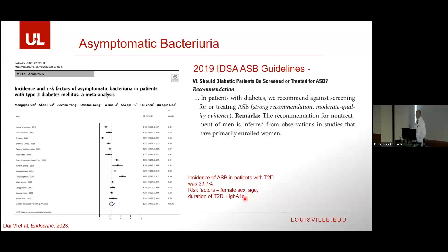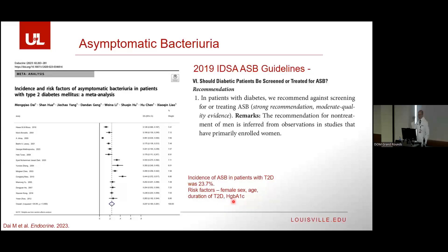I wouldn't be an ID doc talking about UTIs without mentioning asymptomatic bacteriuria. This is bacteria found in urine culture with no patient symptoms whatsoever. Several studies have shown that if we treat these people, they don't do any better, but we do generate antibiotic resistance for the next time they develop symptoms. Do patients with diabetes have asymptomatic bacteriuria? Of course — the incidence rate was almost 25% of all comers with type 2 diabetes, with risk factors including duration of diabetes and hemoglobin A1c. Don't go looking for this because you will find it — you'll get a positive culture, want to treat, and not do the patient any good. The 2019 IDSA Asymptomatic Bacteriuria Guidelines recommend against screening or treating asymptomatic bacteriuria in patients with diabetes.